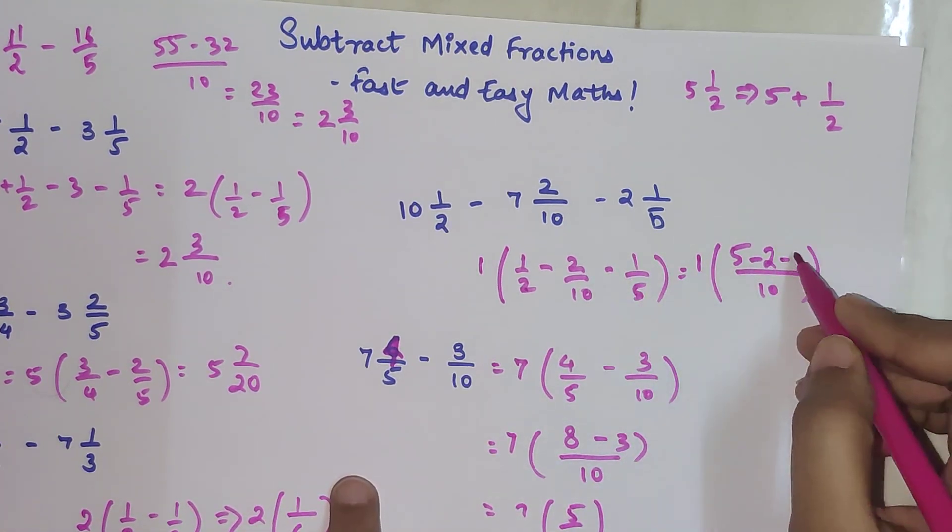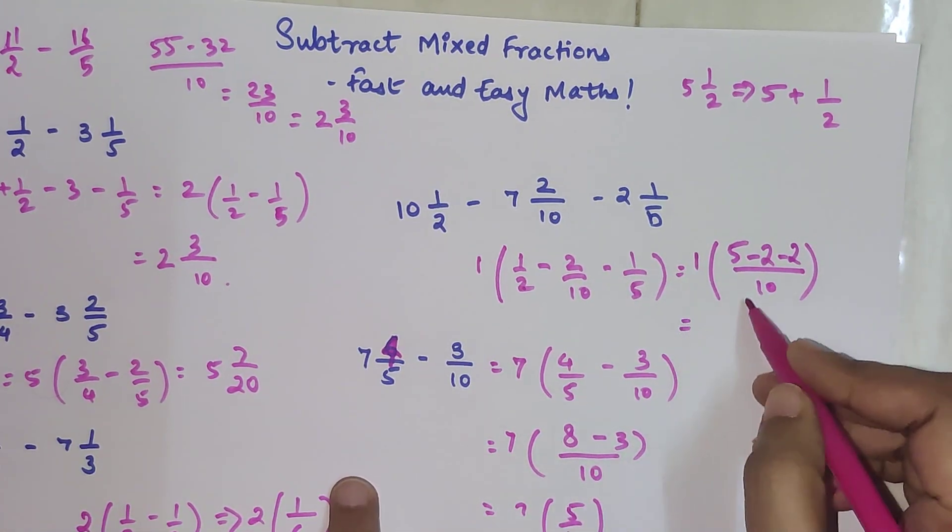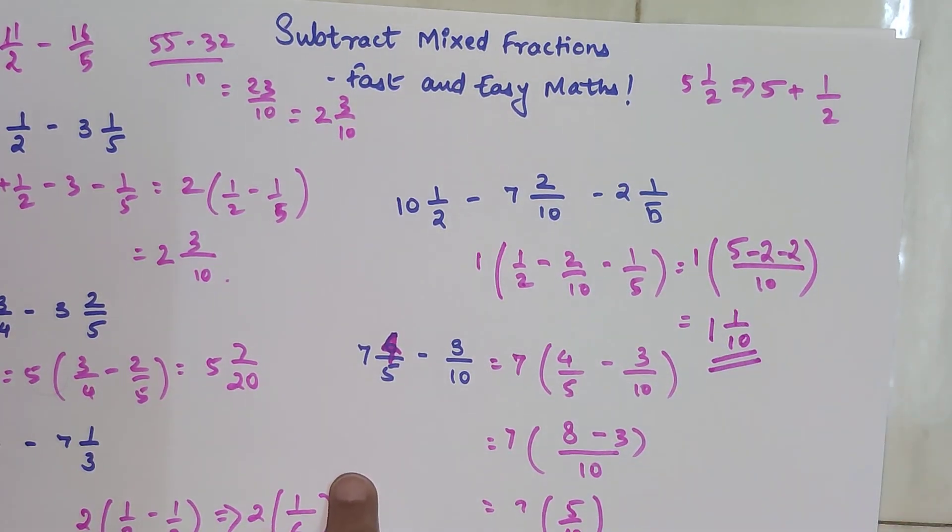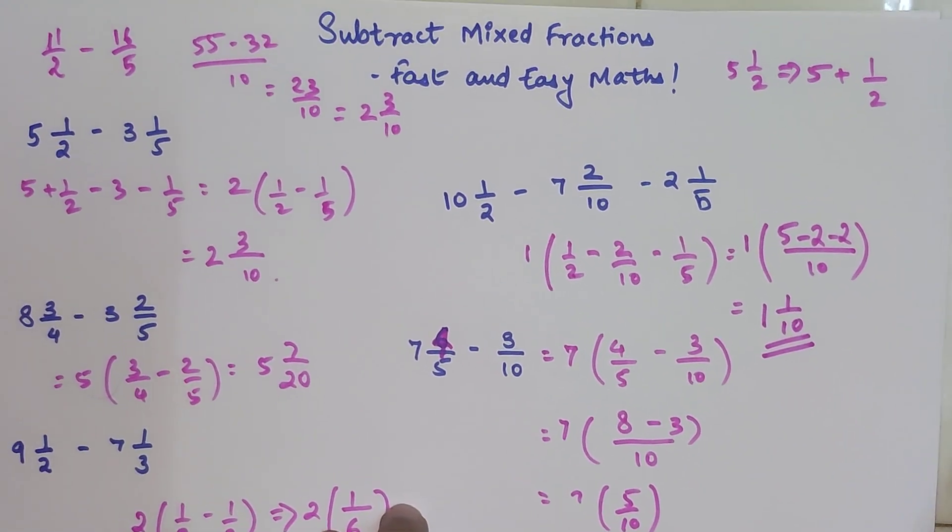2 will remain as 2 because 10 is already my denominator. Here 5 will get multiplied by 2 to make it 10, so 1 will also get multiplied by 2. Here you have 5 minus 2 minus 2 which is 1. So 1 1/10 is your final answer.